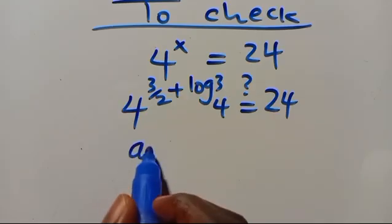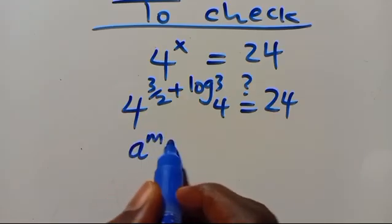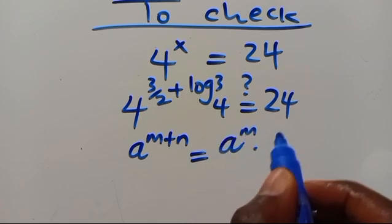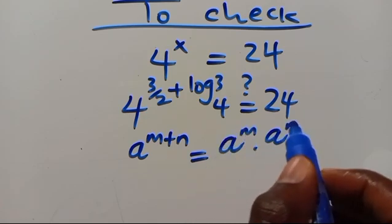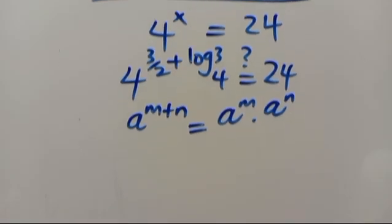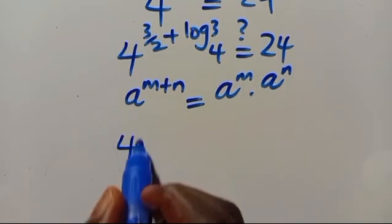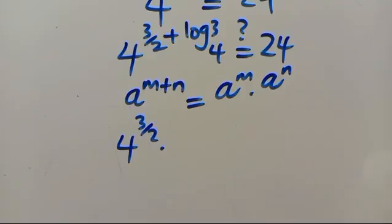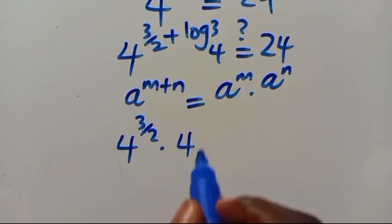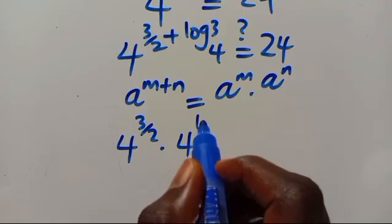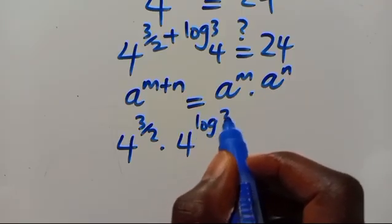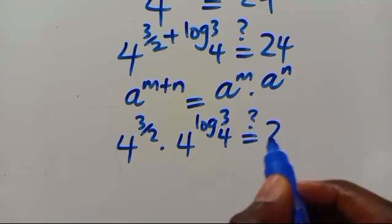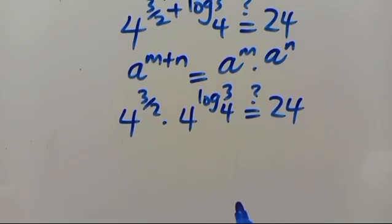Using the exponent addition rule, a to the power of (m + n) equals a to the power of m times a to the power of n, this becomes 4 to the power of 3 over 2 multiplied by 4 to the power of log base 4 of 3, which should give us 24.